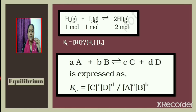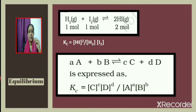Consider the reaction H₂ + I₂ ⇌ 2HI. The equilibrium constant Kc — where 'c' denotes equilibrium constant expressed in terms of concentration — is written as Kc = [HI]² / [H₂][I₂].